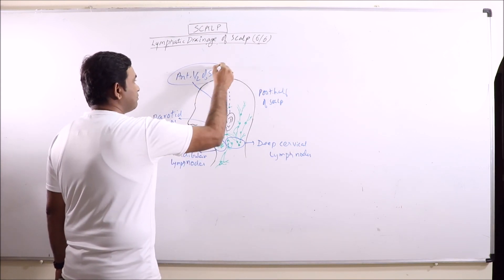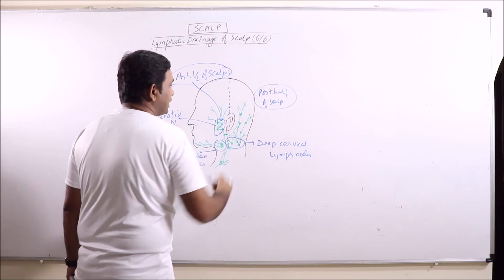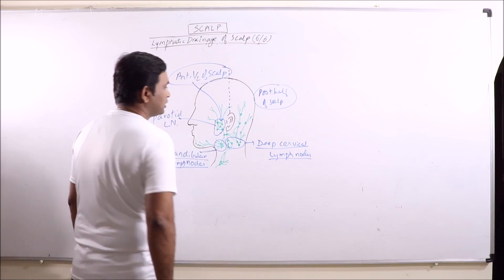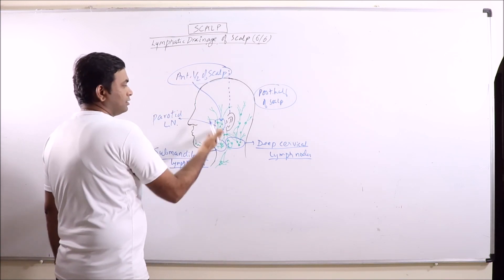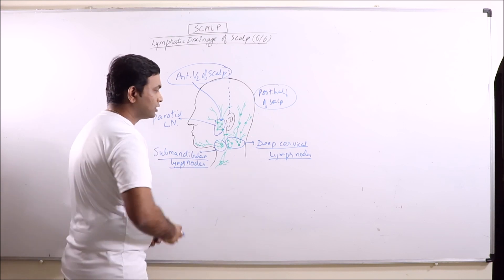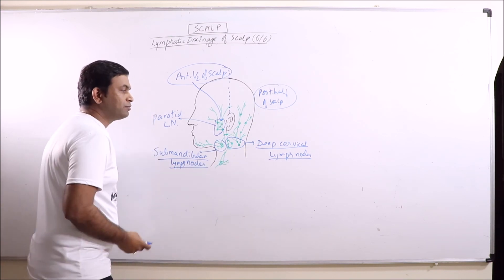The entire half of the scalp and posterior half of the scalp finally drain into submandibular and deep cervical lymph nodes. Difference is that these drain via parotid lymph nodes and these drain directly into the submandibular and deep cervical lymph nodes.